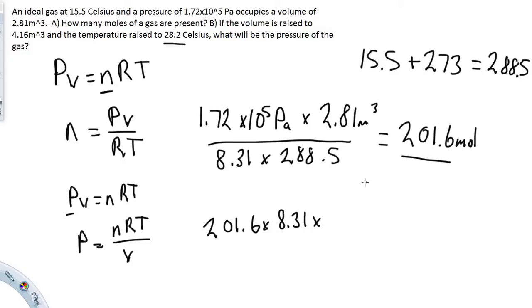...so let's convert that over: 28.2 plus 273 equals 301.2 Kelvin. So we'll put that over here, 301.2...